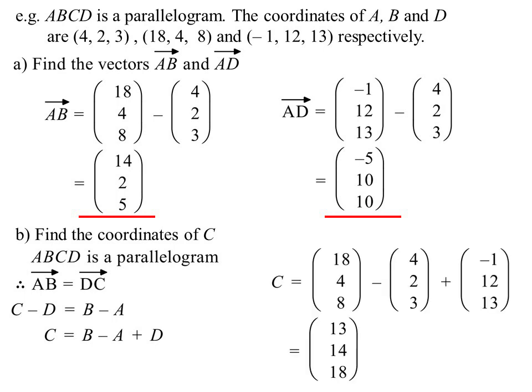Rearrange that and make C the subject. Well, C will equal B minus A plus D. Now, C will equal, there are those three, I've written them as position vectors, 18, 4, 8, minus 4, 2, 3, minus 1, 12, 13. And there is 13, 14, 18. That's as a vector. They ask for the coordinates. All right, I'll rewrite it as coordinates. C is 13, 14, 18.